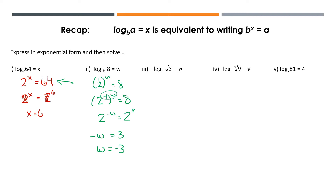Next one — and this is review. Our base is 5, our exponent is p, and that's equal to the square root of 5. So I'm going to write the square root of 5 with a base of 5 — the square root is the same as the exponent of 1/2. That's all the work that needs to be done. Our bases match, so when we ignore them and look at the exponents, we just have p equals 1/2.